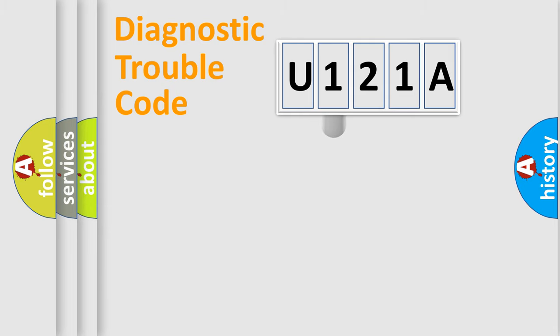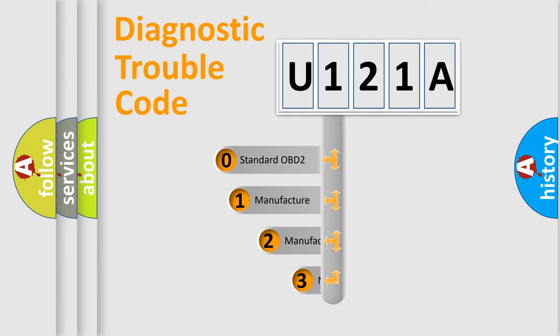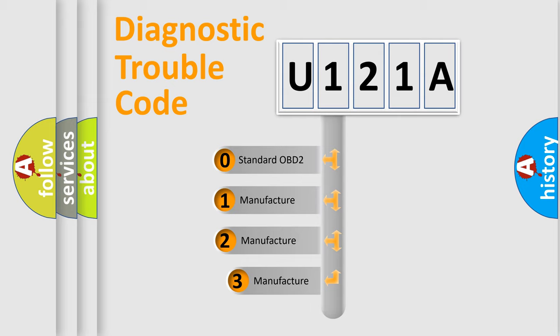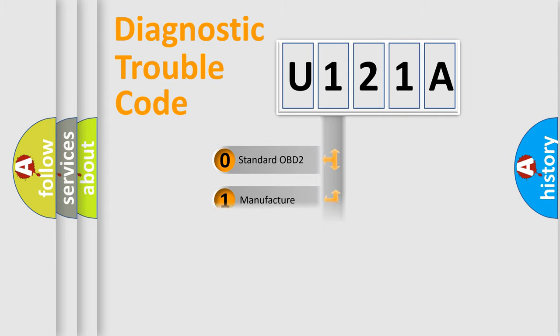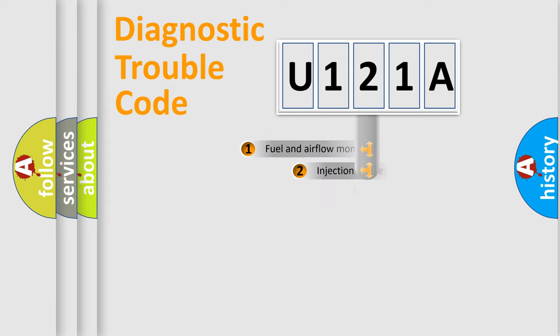This distribution is defined in the first character of the code. If the second character is expressed as zero, it is a standardized error. In the case of numbers 1, 2, or 3, it is a more specific expression of a car manufacturer-specific error.